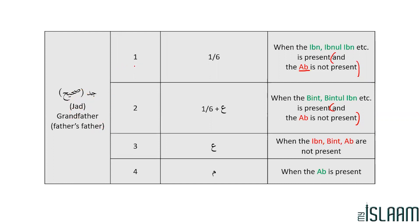The conditions of the Jad are very similar to the conditions of the Ab, especially the first, second, and third conditions. Obviously the Ab never had a fourth condition, but in conditions 1, 2, and 3 it's almost identical, except that there's an extra clause added in. If you refer back to the table, in Ab condition number 1 it read: when the Ibn, Ibn al-Ibn, etc. is present — over here we have the same thing, copy-paste, but we've added an extra clause.